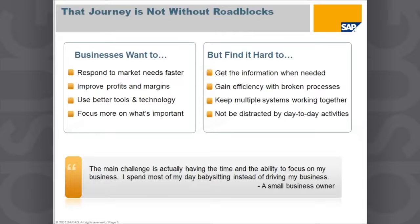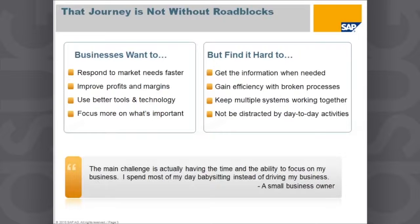Businesses haven't had time to fix those broken processes because it's always full speed ahead. They're trying to keep multiple systems working together — a system for accounting, a system for salesforce automation or CRM, a different system in the warehouse, and another in the service department. As you well know, it's hard to keep all of those systems working together without getting distracted by day-to-day activities.